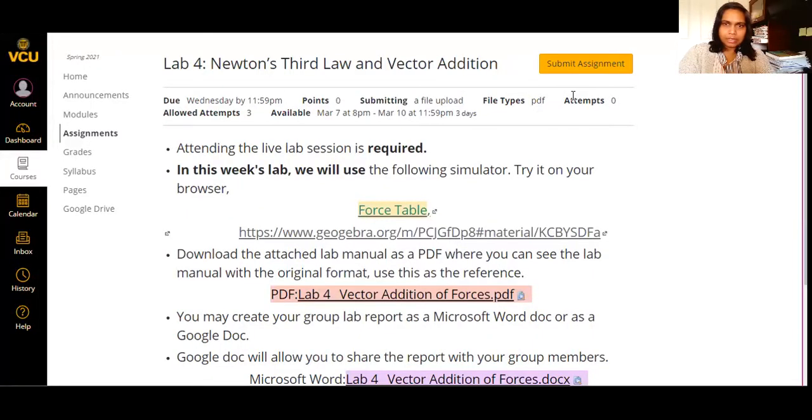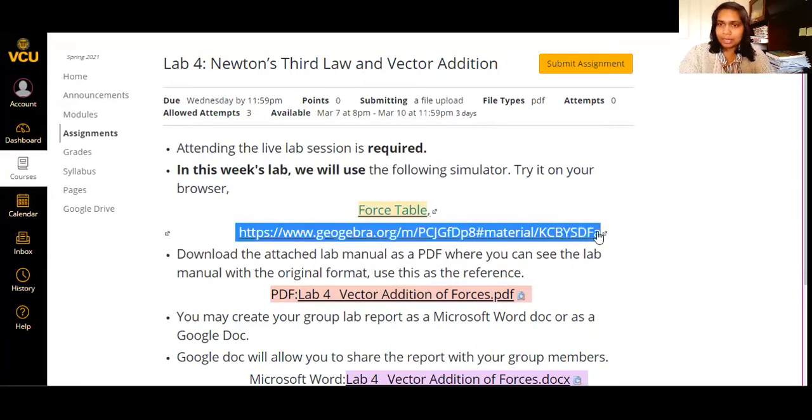All right. So when you go to your assignment on the Canvas page, you will see the link to the simulator. You can click on this link and it will take you to the browser. Just in case, if it is not opening properly, please copy and paste this link. Just select and copy and paste it onto your browser. It should open the simulator for you.